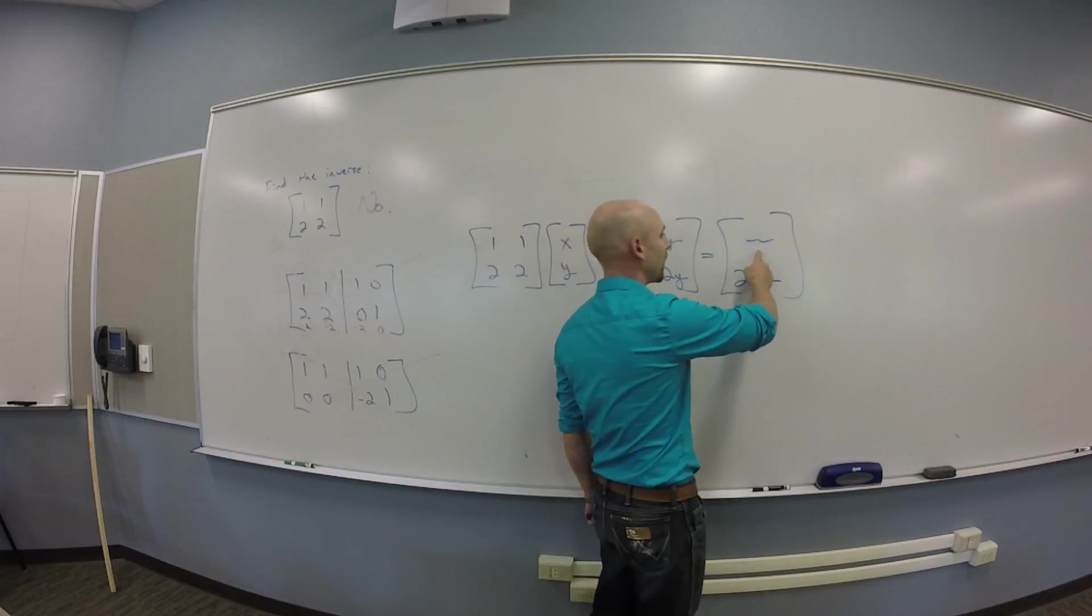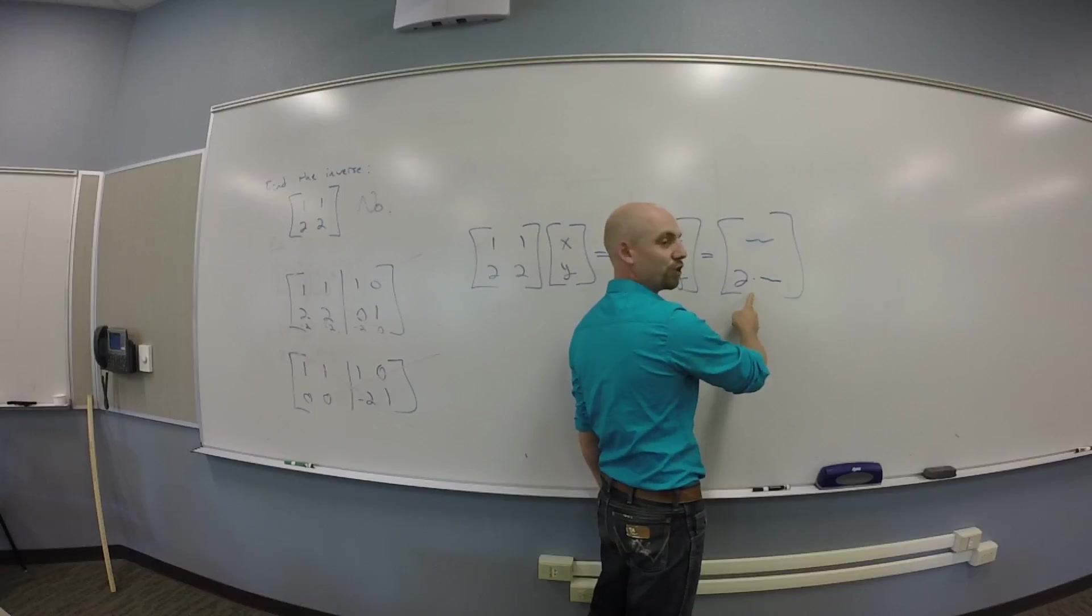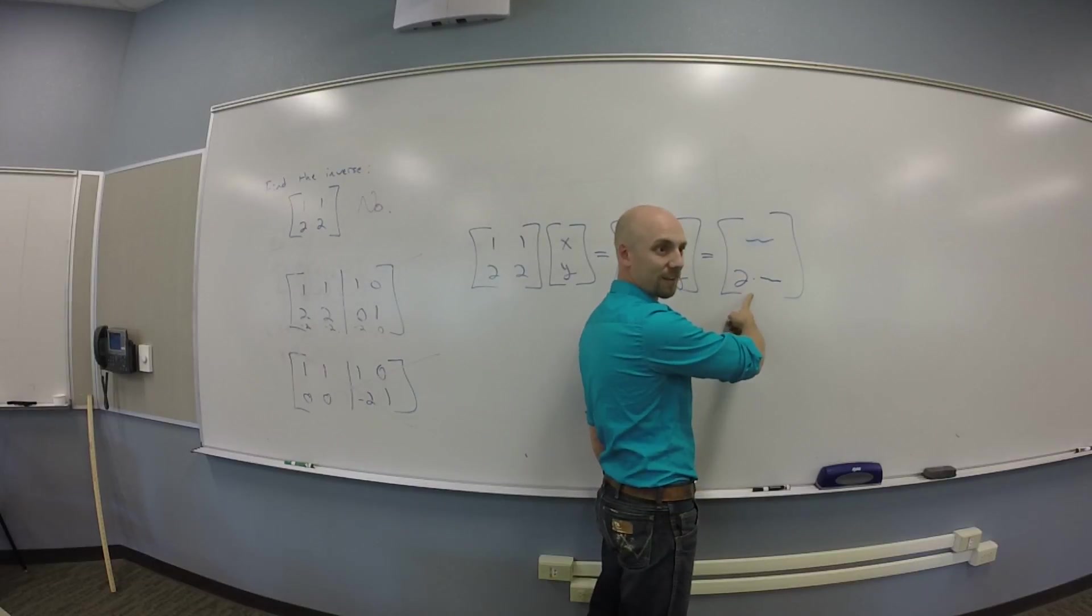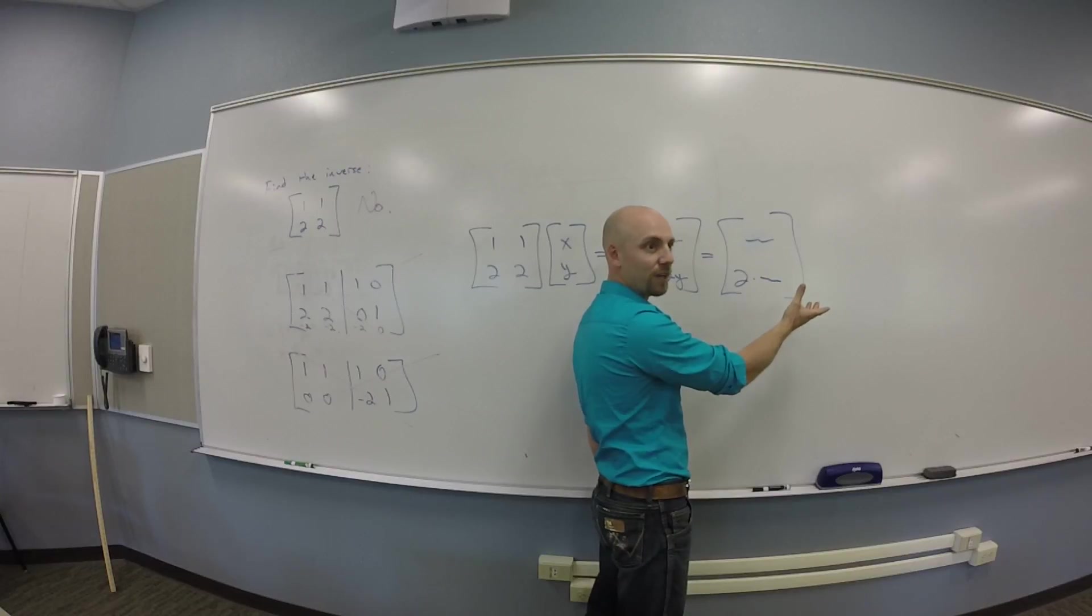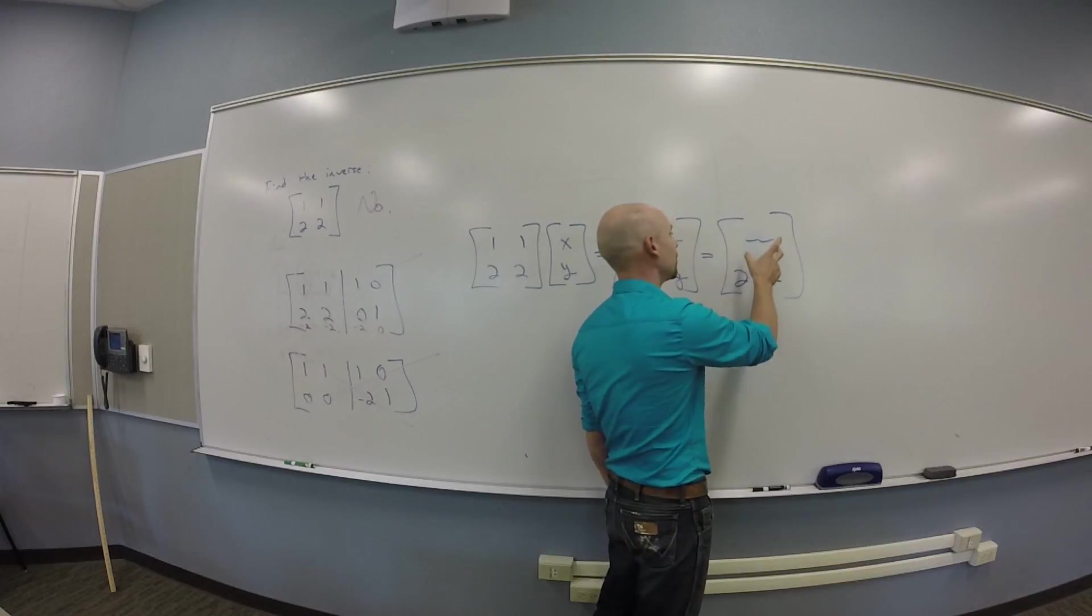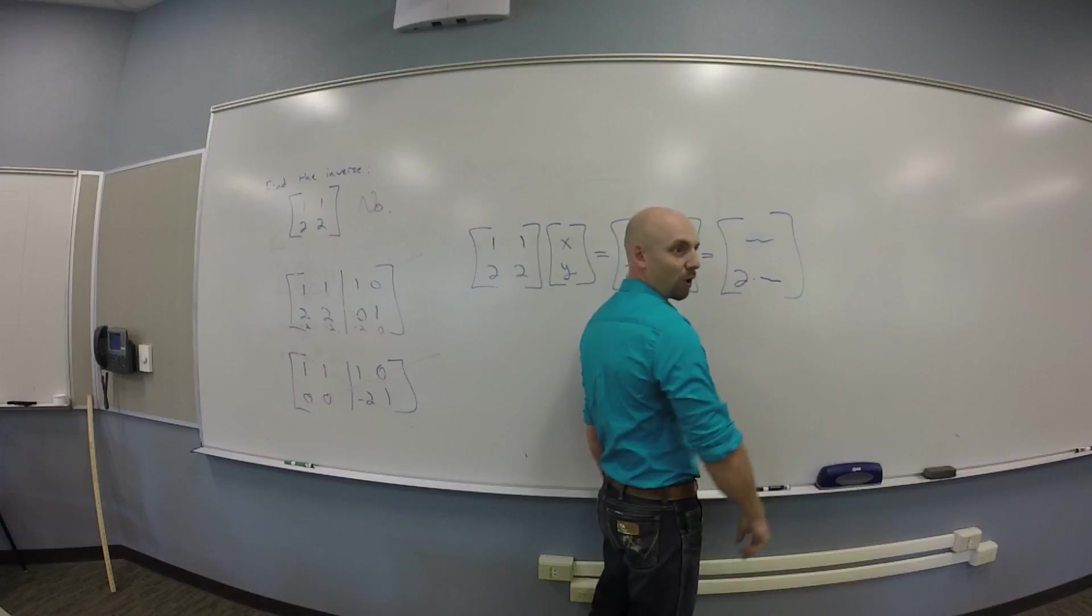Yeah. Specifically, I can't get the vector that looks like 0, 2 out of this thing, right? This thing misses a whole bunch of stuff. It can only come out with answers that look like stuff, comma, twice stuff.